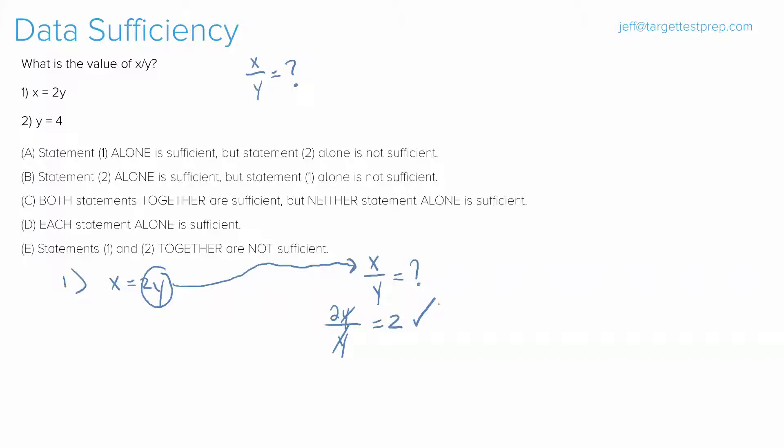Now, quickly, if we look at statement two, we realize that y being 4 is not going to be enough because then we're going to be left with simply x over 4 and that's not a value. So, the answer to this question is A, but more importantly, I want to talk about the strategy behind this question and really what the GMAT is testing in this question, and then we're going to move on to one that's slightly harder.